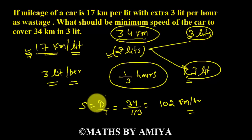We have distance, we have time, so we find our speed. So 102 is the minimum speed at which if we move, then we can cover 34 km in 3 litres under these conditions. I hope it is clear.